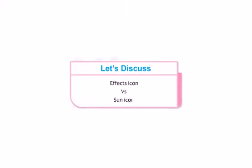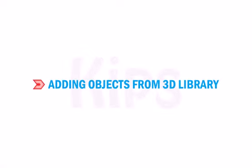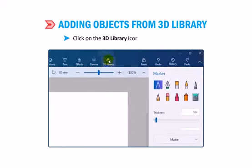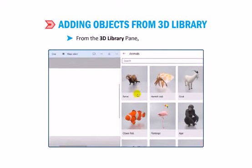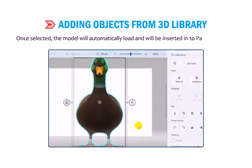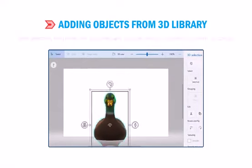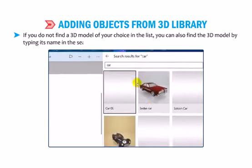Students, let's have a discussion. Alright, students, let us understand how to add objects from the 3D library. Click on the 3D library icon in the top menu. From the 3D library pane, select a 3D model. Once selected, the model will automatically load and will be inserted into the Paint 3D canvas. If you do not find a 3D model of your choice in the list, you can also find the 3D model by typing its name in the search box.